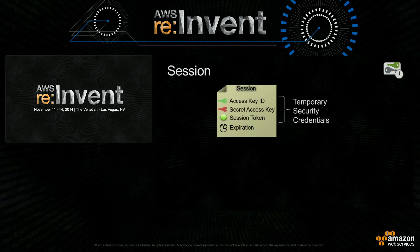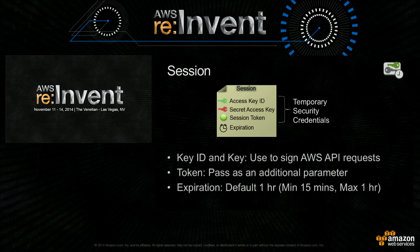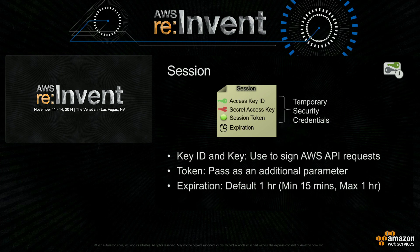Let's look inside the session. A session has four elements: AccessKeyID, SecretAccessKey, SessionToken, and Expiration. AccessKeyID and SecretAccessKey is the symmetric credential — in plain English, it's just a shared secret between AWS and you. I have seen some confusion around this among customers, as people often confuse this with the EC2 key pair.